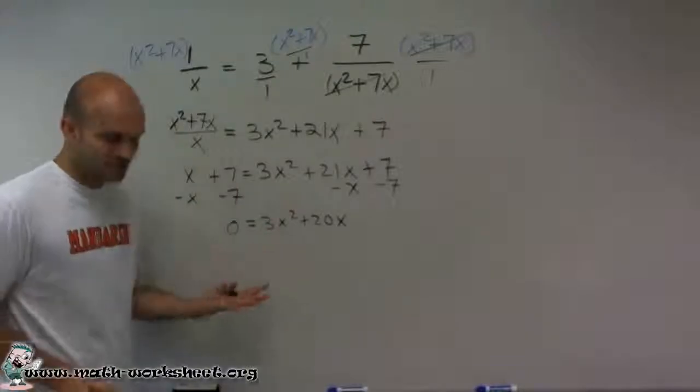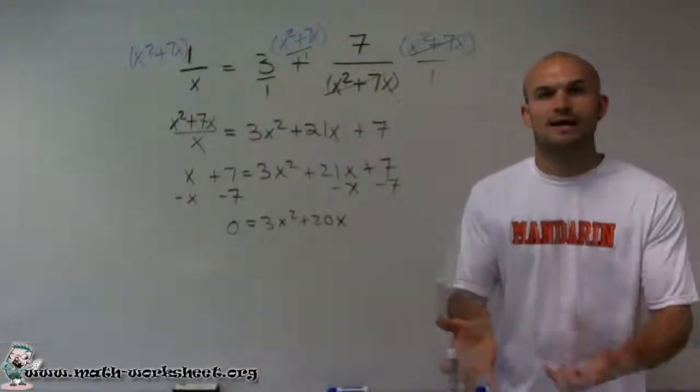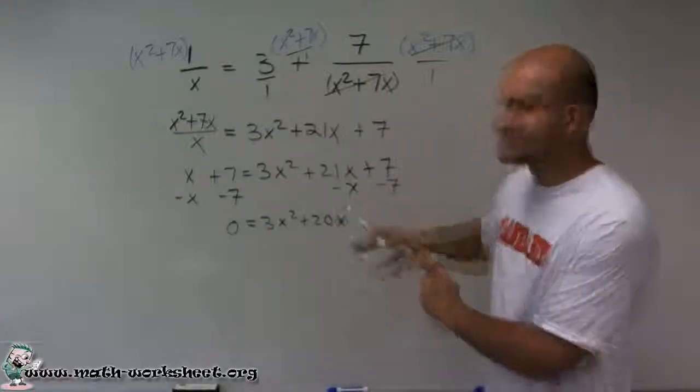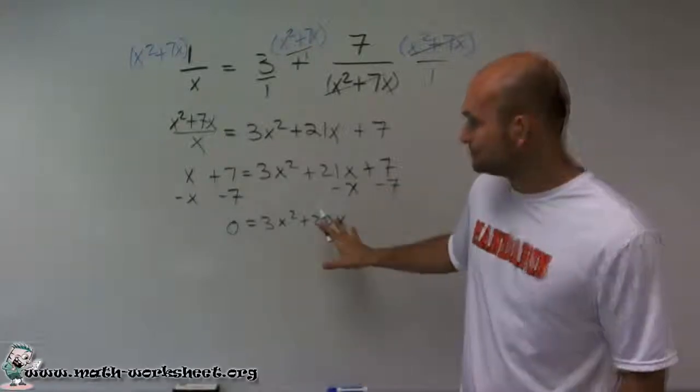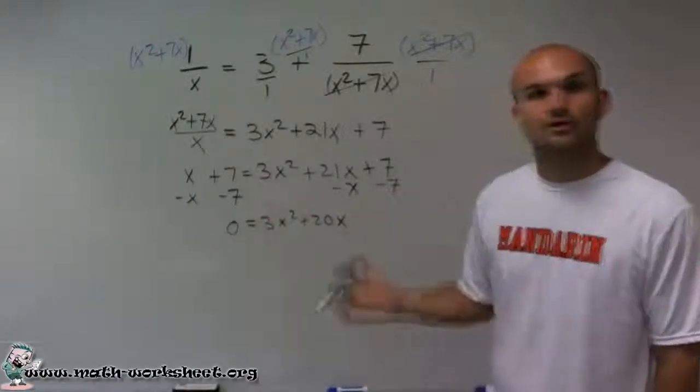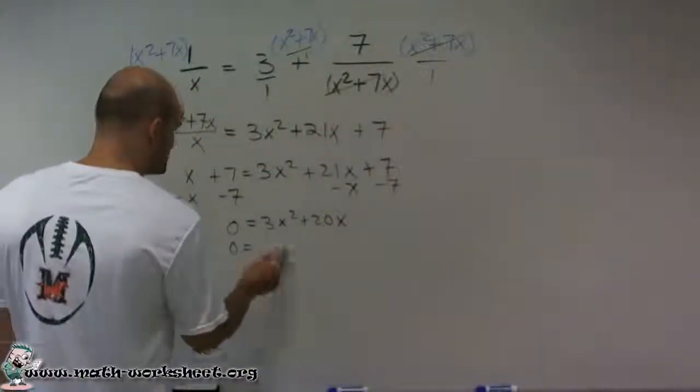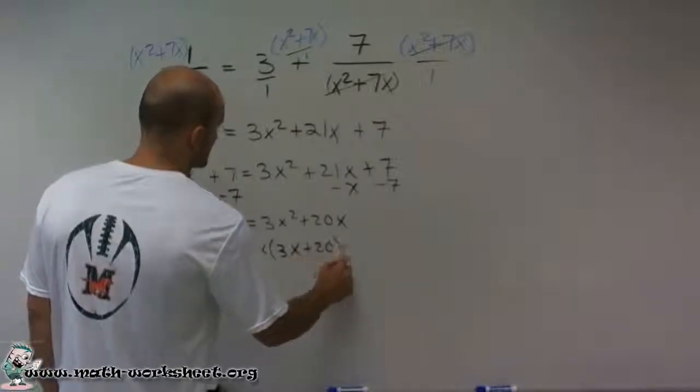So now once I have it in this term, I can look to all my different methods. I have it equal to zero. I can say, all right, now what are all the different methods I can use to solve? And in this form, I'm going to use factoring. So what I'm going to do is I'm going to say, all right, what terms can I factor out to solve for this? Well, I can say zero equals x times 3x plus 20.